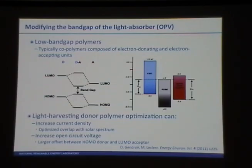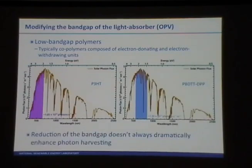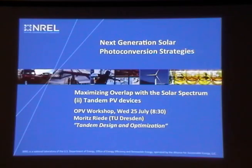For low-bandgap polymers, people have been combining donor and acceptor units within the polymer chain. The LUMO from the donor and acceptor components hybridize to give two new unoccupied orbitals, and similarly for the HOMO. The HOMO of the donor-acceptor polymer is dominated by the donor's HOMO and the LUMO by the acceptor. By changing the bandgap of this polymer to shift the absorption threshold to lower energy, you harvest more photons from the solar spectrum. Additionally, by tuning the HOMO and LUMO positions you can create a larger offset with your acceptor and increase the open circuit voltage. So you can increase both current density and open circuit voltage — a double hit on power conversion efficiency.